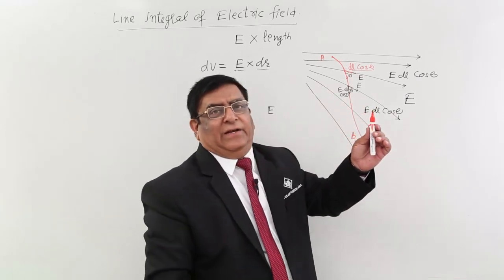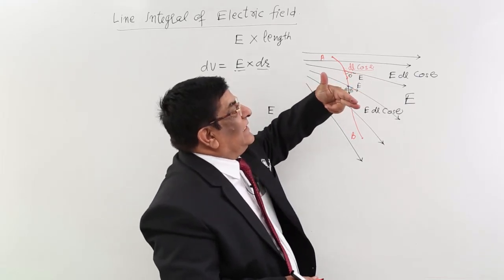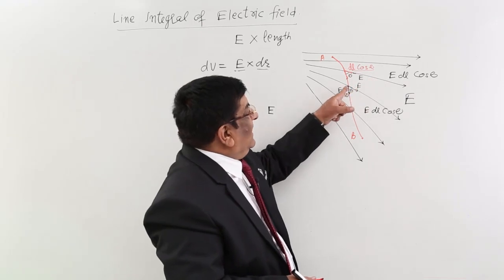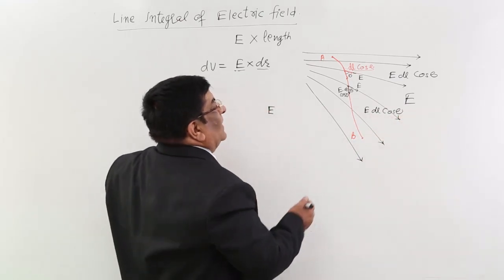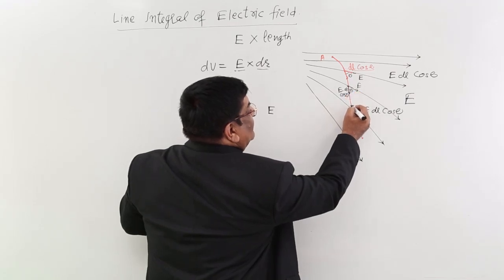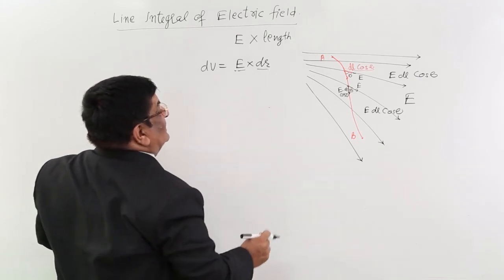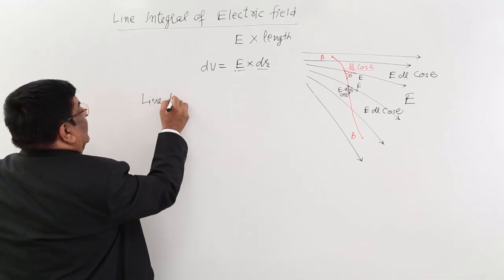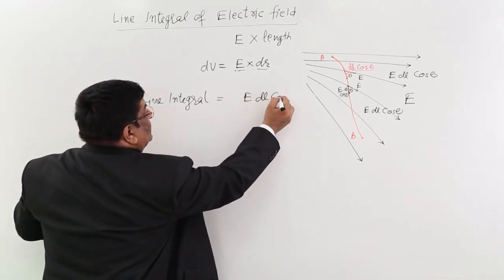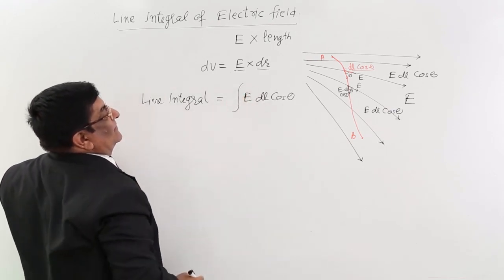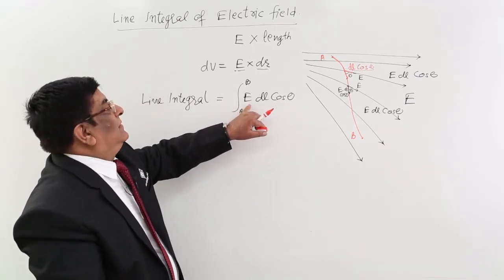This we have done as the scalar product of two vectors. E and dl are two vectors. Whether we take E in the line of dl or dl in the line of E, the product is always E dl cos θ. So everywhere from point A to B we keep doing this multiplication. The line integral is equal to the integral from A to B of E·dl cos θ, which we can write as the integral of E dot dl. This is the line integral of electric field.